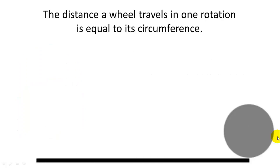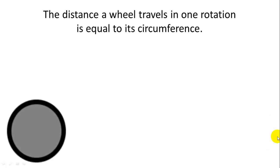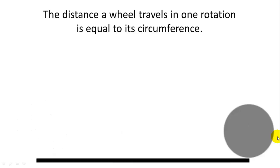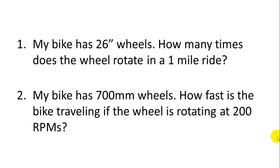So we're going to convert between the circumference of a wheel and its rpms, and the linear distance that it travels as it rolls forward. So let's solve a couple of sample problems. Problem number one, my bike has 26-inch wheels. How many times does the wheel rotate in a one-mile ride? And problem number two, my bike has 700-millimeter wheels. How fast is the bike traveling if the wheel is rotating at 200 rpms?